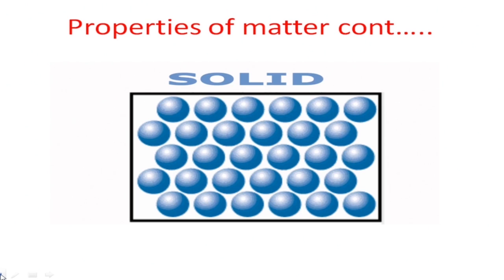Now, let's look at the three states of matter in order of the arrangement of particles. The first state is solid. The particles of solids are regularly arranged and closely packed together, with intermolecular space between one particle and the other, making them compact. This arrangement gives solids their definite shape and volume, because of the strong force of attraction that exists between the particles.